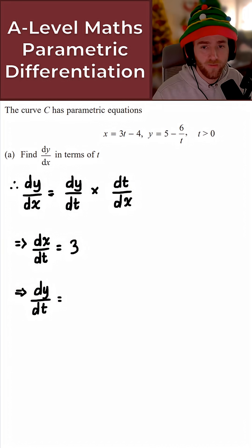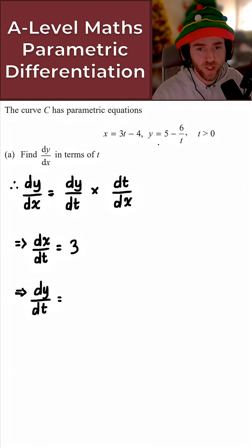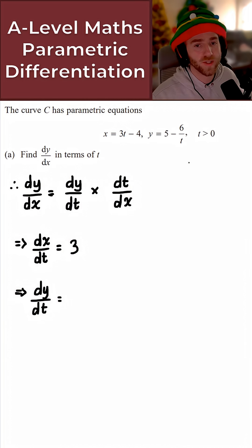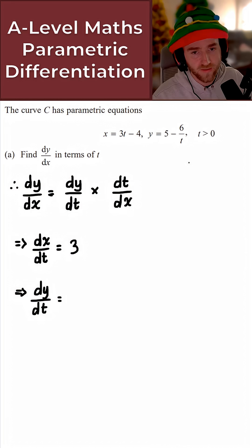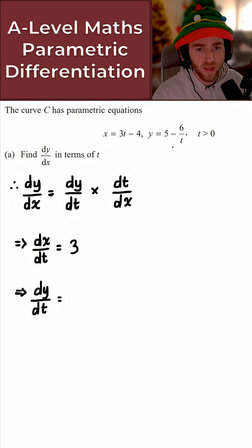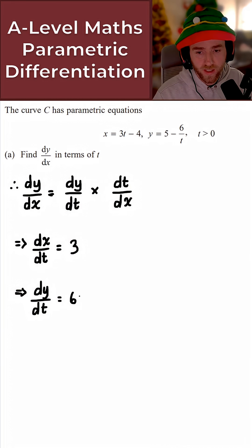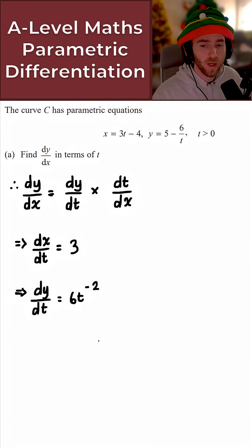Now for dy/dt, again pretty straightforward — just differentiate y with respect to t. The 5 here is just a constant that differentiates to give us 0. If it helps, this is minus 6t to the minus 1, so what we get for dy/dt is 6t to the minus 2.